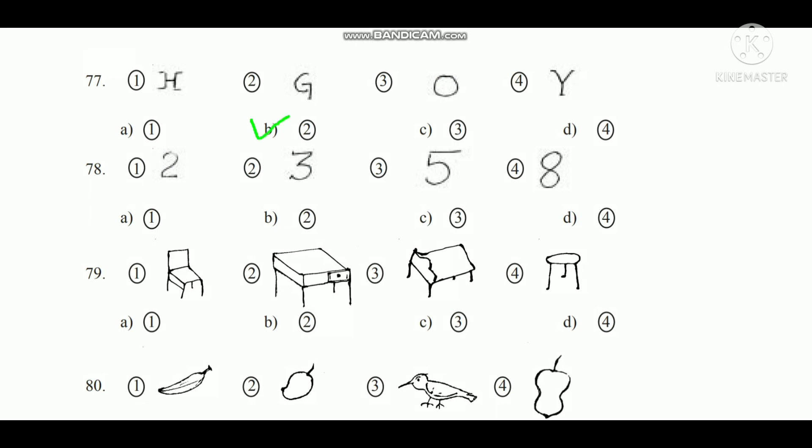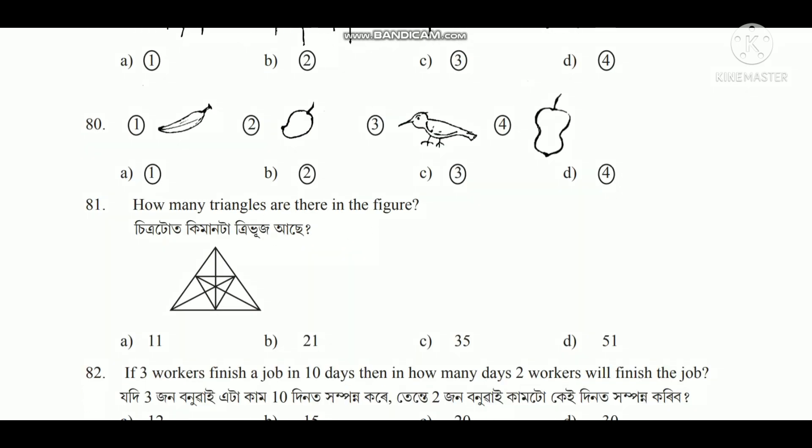Question number 78, which is 90 degrees, option D. Question number 79, which is 90 degrees, option D. Question number 80, option A, B, C, D — saitra which is option 3.